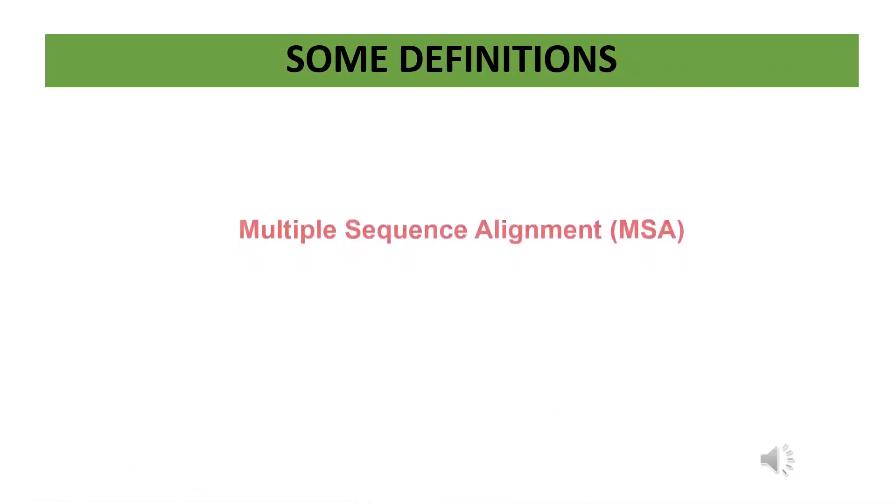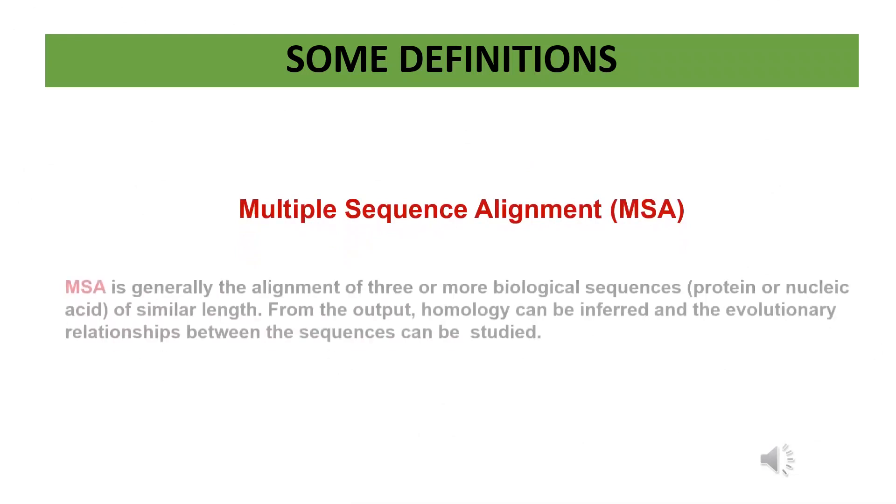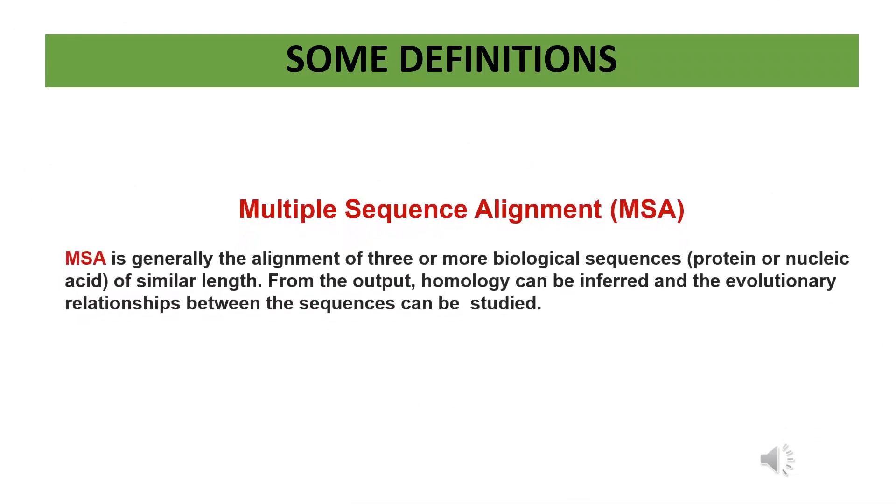Let us look at some definitions related with multiple sequence alignment. What is actually multiple sequence alignment? It is generally the alignment of three or more biological sequences that is protein or nucleic acid of similar length. From the output homology can be inferred and the evolutionary relationships between the sequences can be studied.